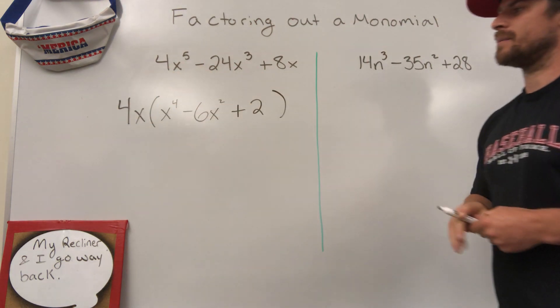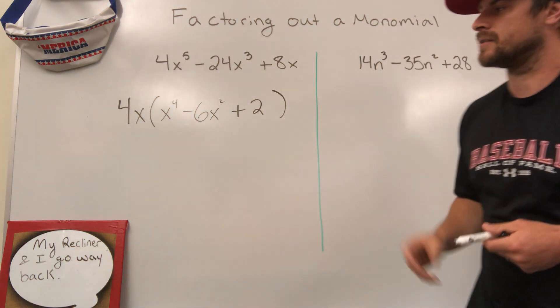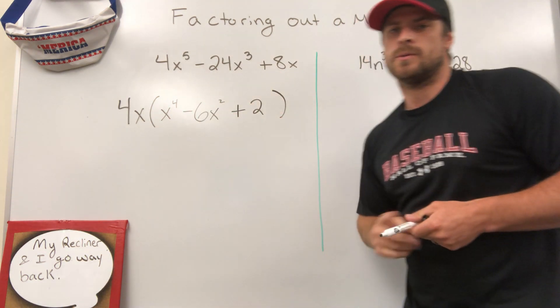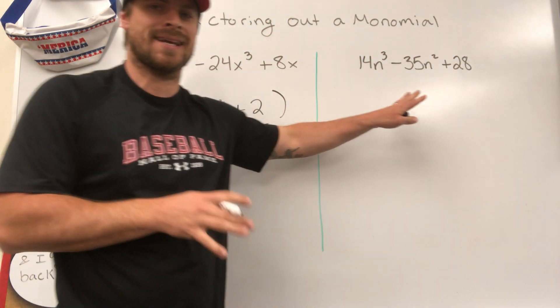You have now factored out a monomial, the monomial being the 4x. We factored that out from the trinomial. That's your first example. Now let's take a peek at the second example where we have something slightly different.